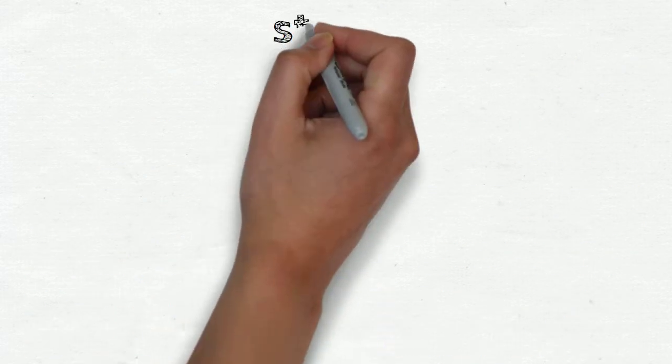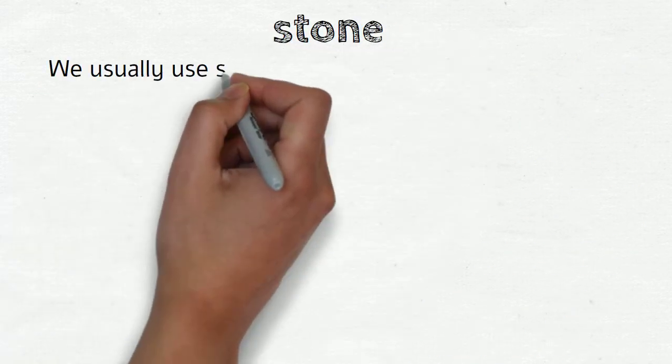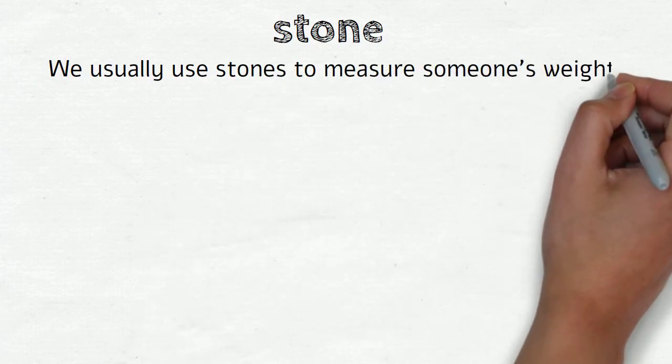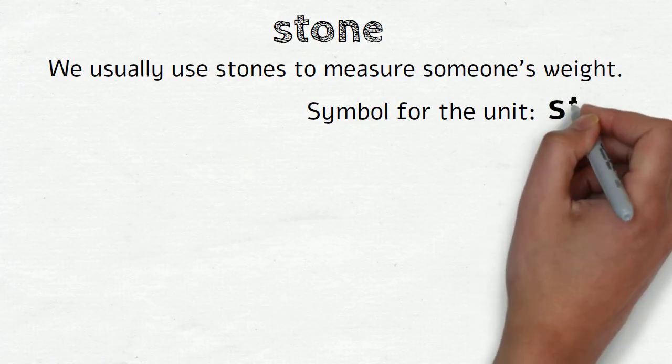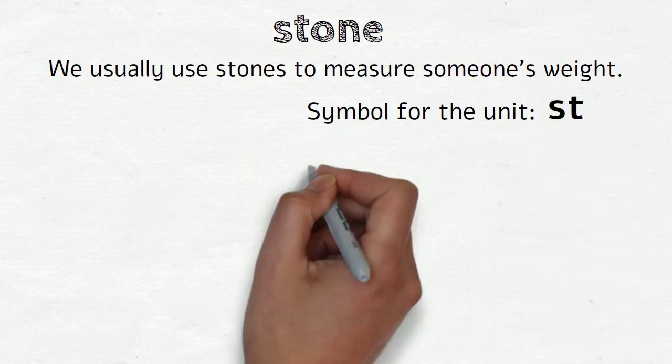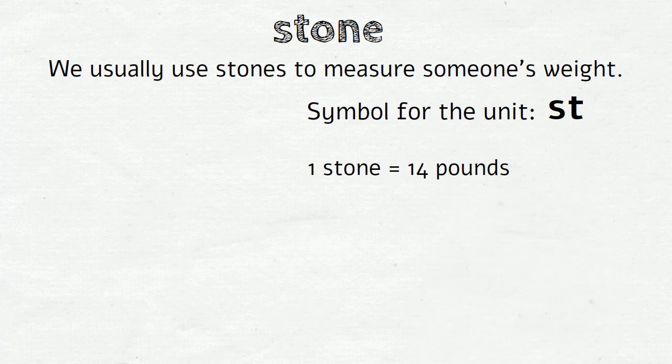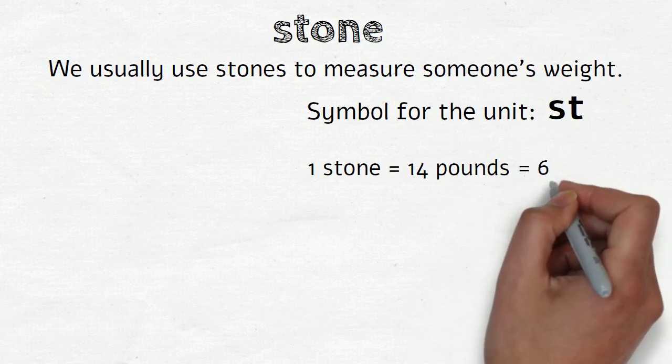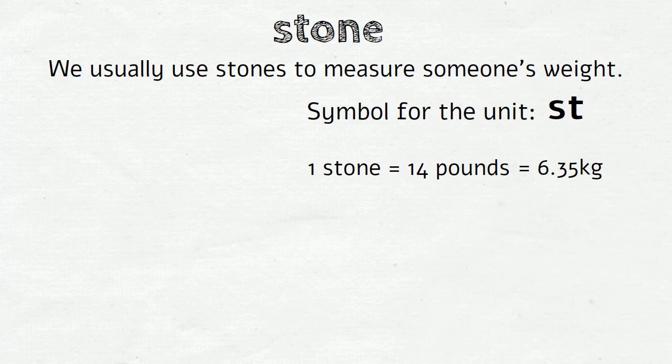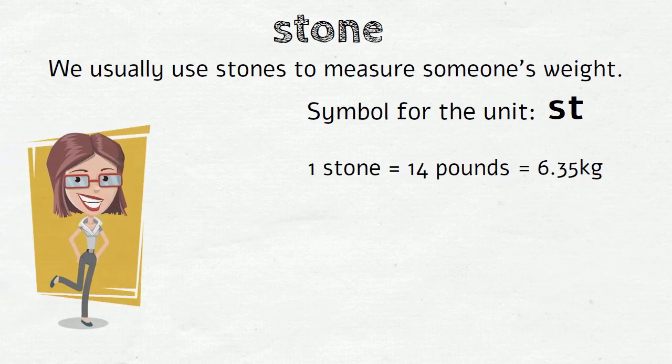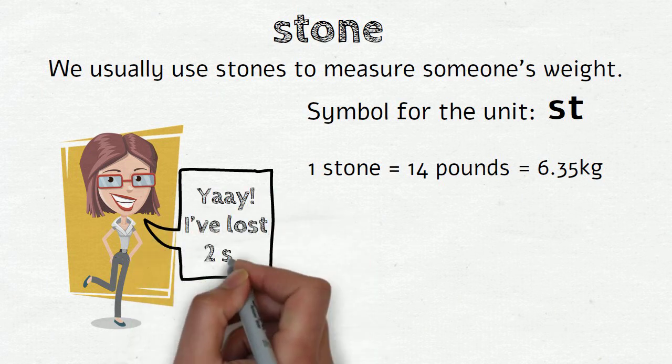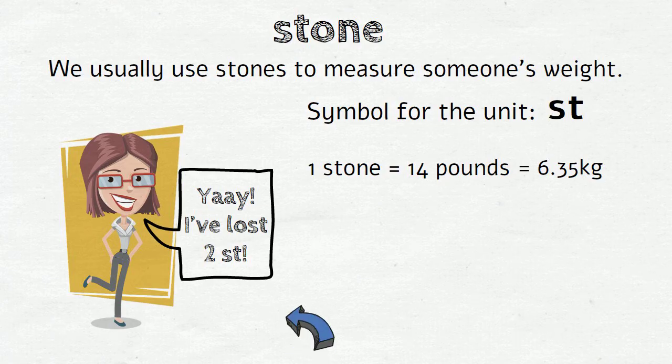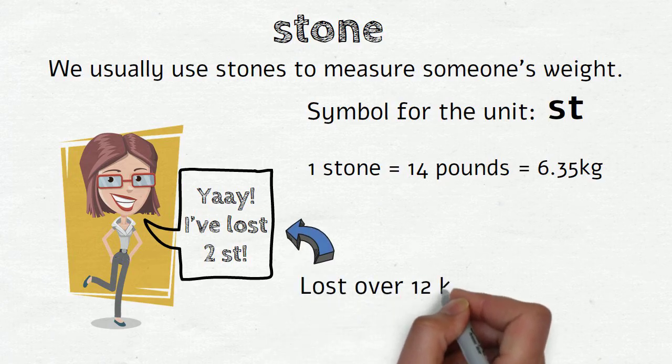Stones. We usually use stones to measure someone's weight. The symbol for the unit is st. 1 stone equals 14 pounds. It also equals 6.35 kilograms in a metric system. So if your friend says 'Yay! I've lost 2 stones,' it means that she's lost over 12 kilograms.